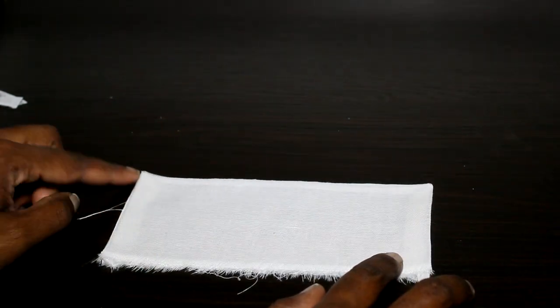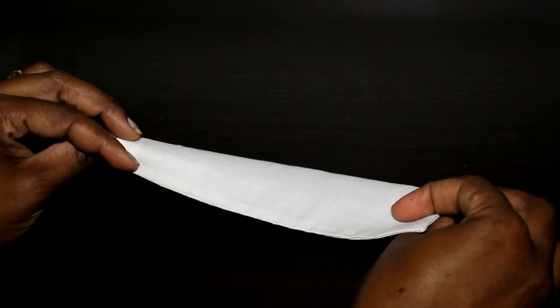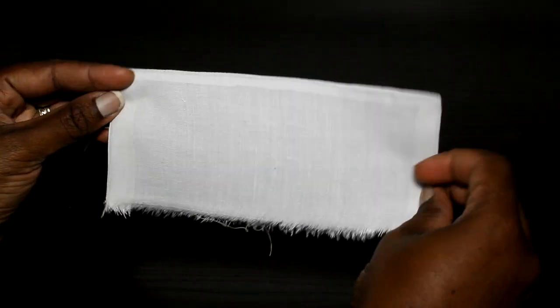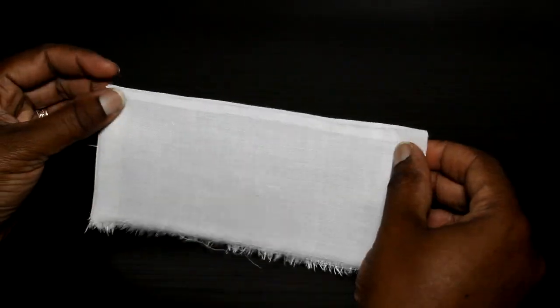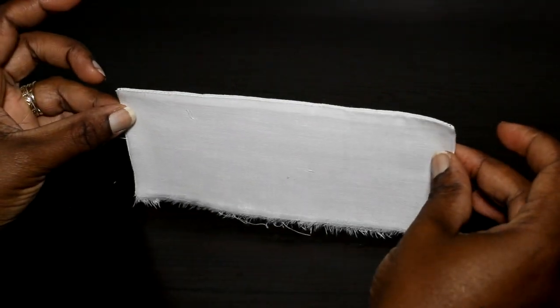And you can see now I have my corners out nicely and everything is flat. There's no fabric bunching underneath because we've trimmed off all that excess fabric in there. So that's how you deal with corners.